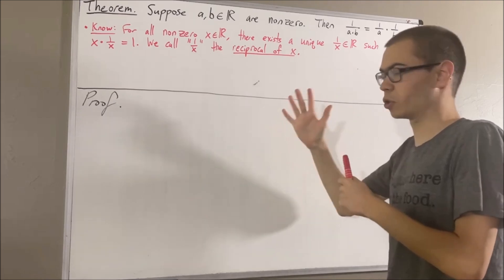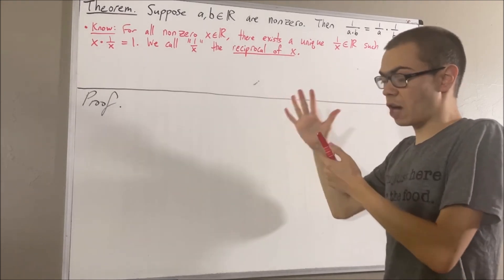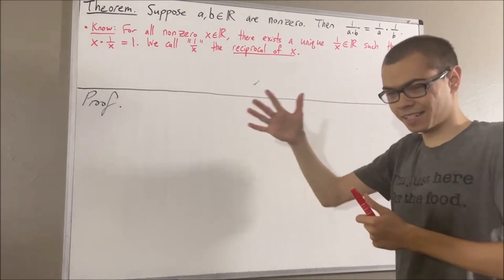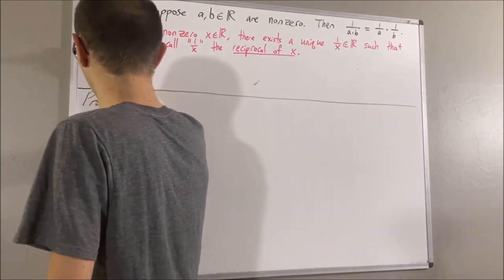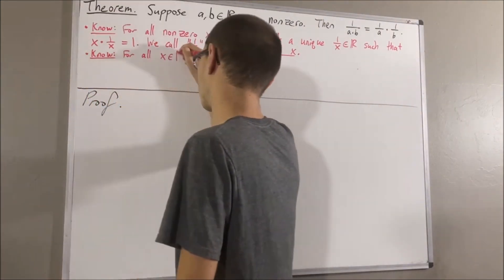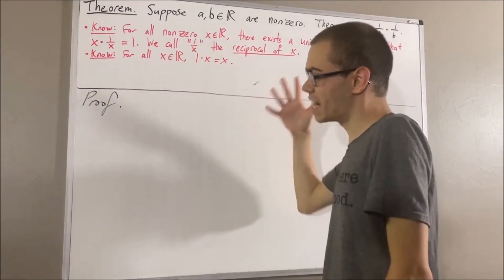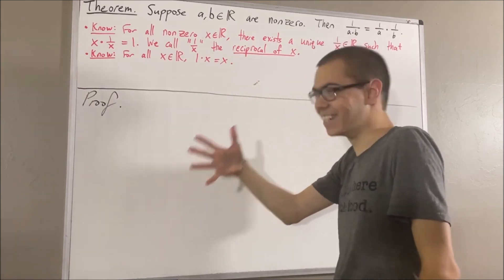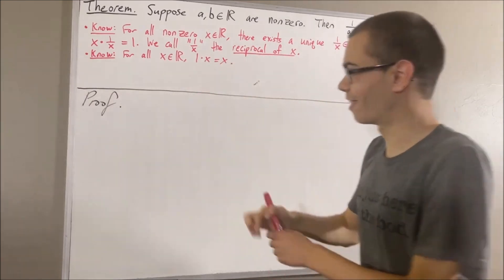Another property of the field numbers we're going to use is: for every real number x, 1 times x is equal to x. And in addition, multiplication is both commutative and associative.